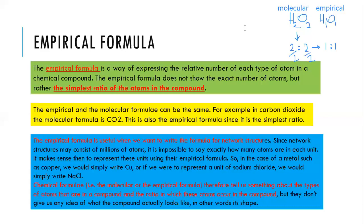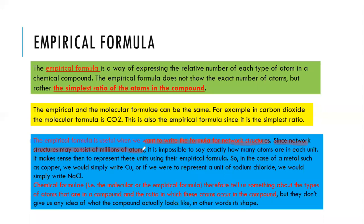The empirical formula is useful when we want to write the formula for network structures, since network structures may consist of millions of atoms. You cannot write C 1 million or 2 million — it's strange. Instead, you divide both by 1 million and get the ratio, then write the simplest formula. It is impossible to say exactly how many atoms are in each unit, so we represent these using the empirical formula — the simplest ratio formula.